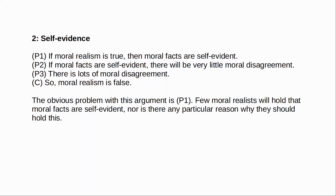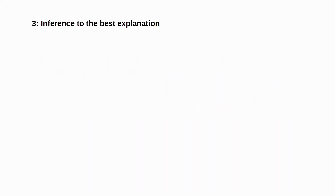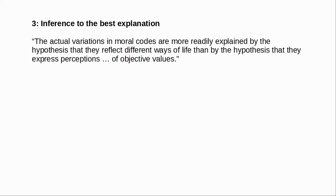A third disagreement argument uses inference to the best explanation. This is most famously proposed by J.L. Mackie in his defense of moral error theory in his book Ethics: Inventing Right and Wrong. The claim is that some form of anti-realism is the best explanation for the patterns of disagreement we find with morality. Mackie says, and I quote: 'the actual variations in the moral codes are more readily explained by the hypothesis that they reflect ways of life than by the hypothesis that they express perceptions, most of them seriously inadequate and badly distorted, of objective values.'